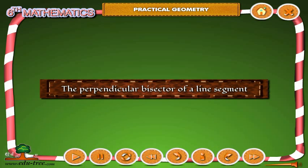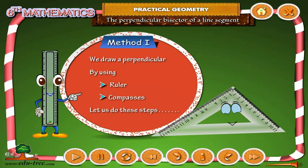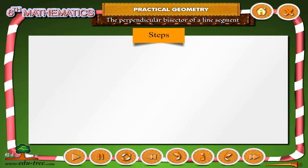The perpendicular bisector of a line segment. Method 1: We draw a perpendicular bisector by using ruler and compasses. Let us do these steps.